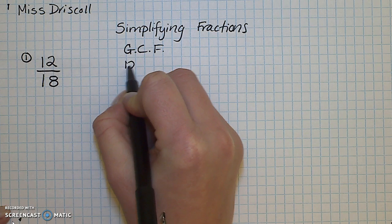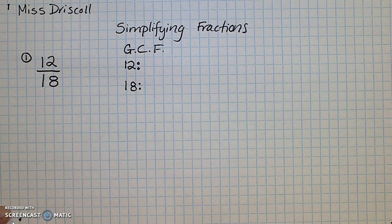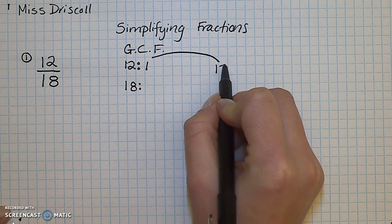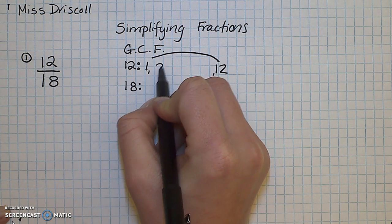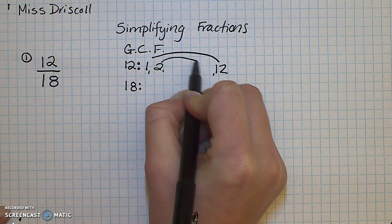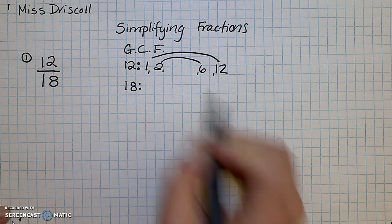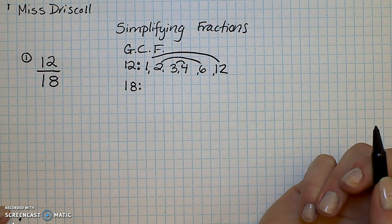Say we have number one: 12 eighteenths. I'm going to write down 12 and 18 to find my greatest common factor. Don't forget about the freebies — how 1 and the number itself are always factors. I like to count up. Does 2 go into 12? Yes, 2 times 6. Does 3 go into 12? Yes, 3 times 4. So those are my factors for 12.